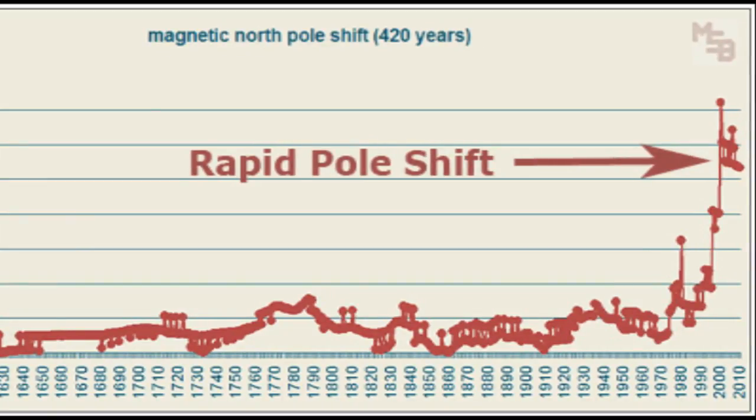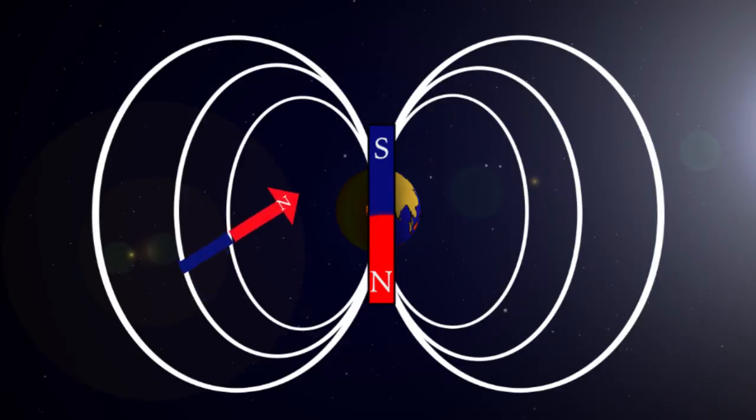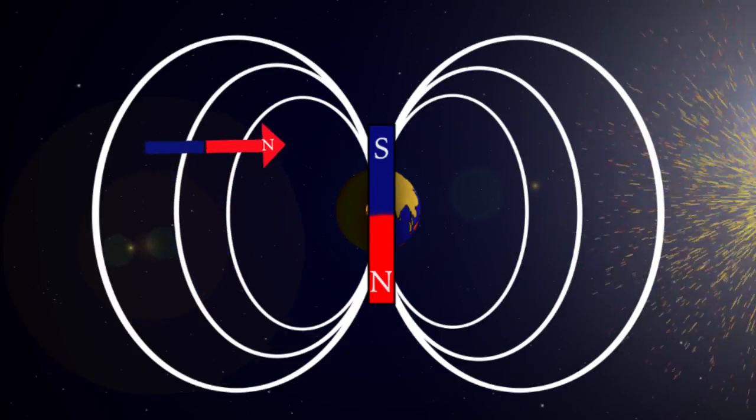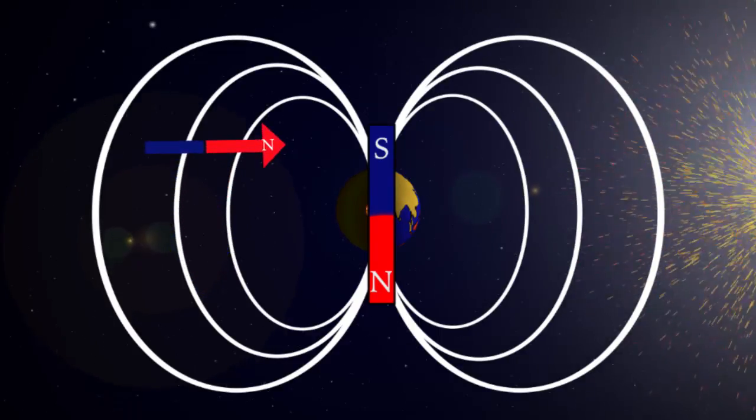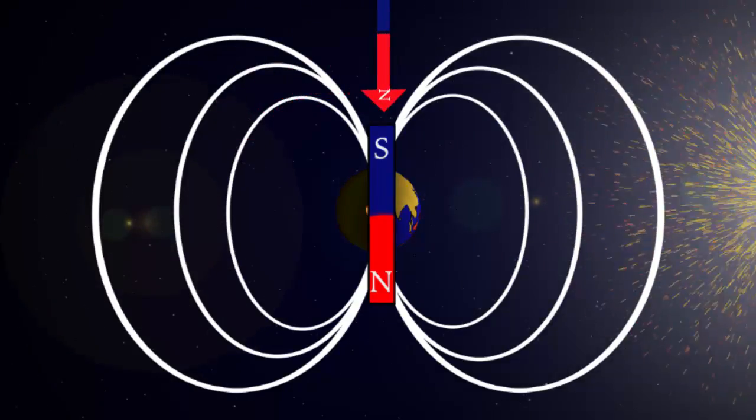So your compass's north-seeking end will point to this south-seeking pole of the geodynamo, and if you are directly west of it, your compass will point east. And if you are north of this pole, your north-seeking needle points south.